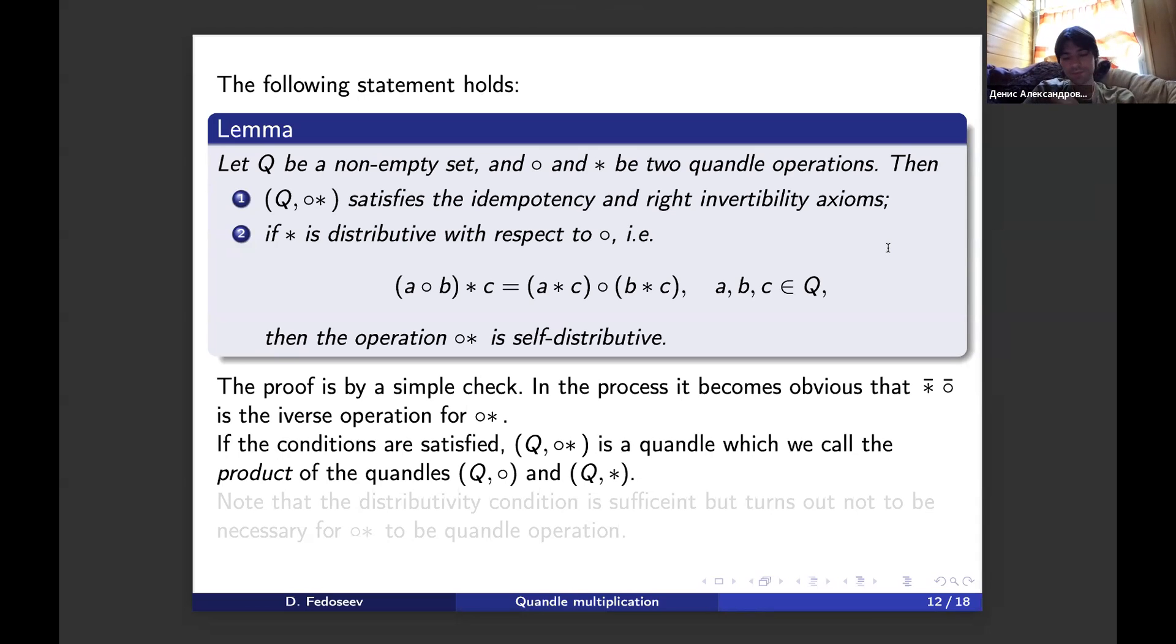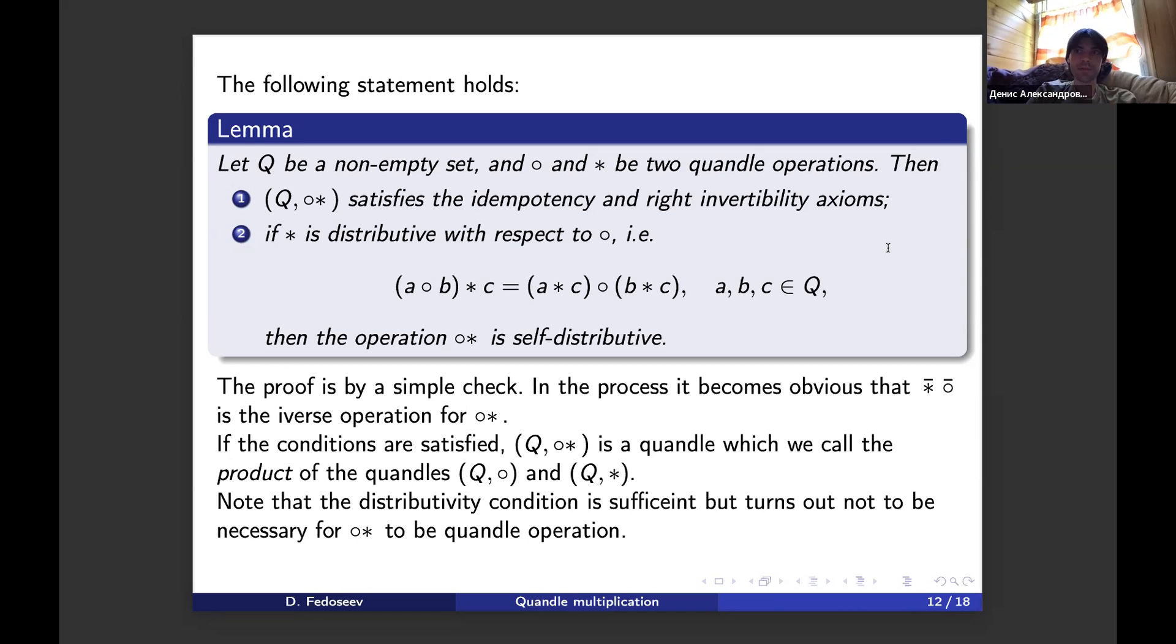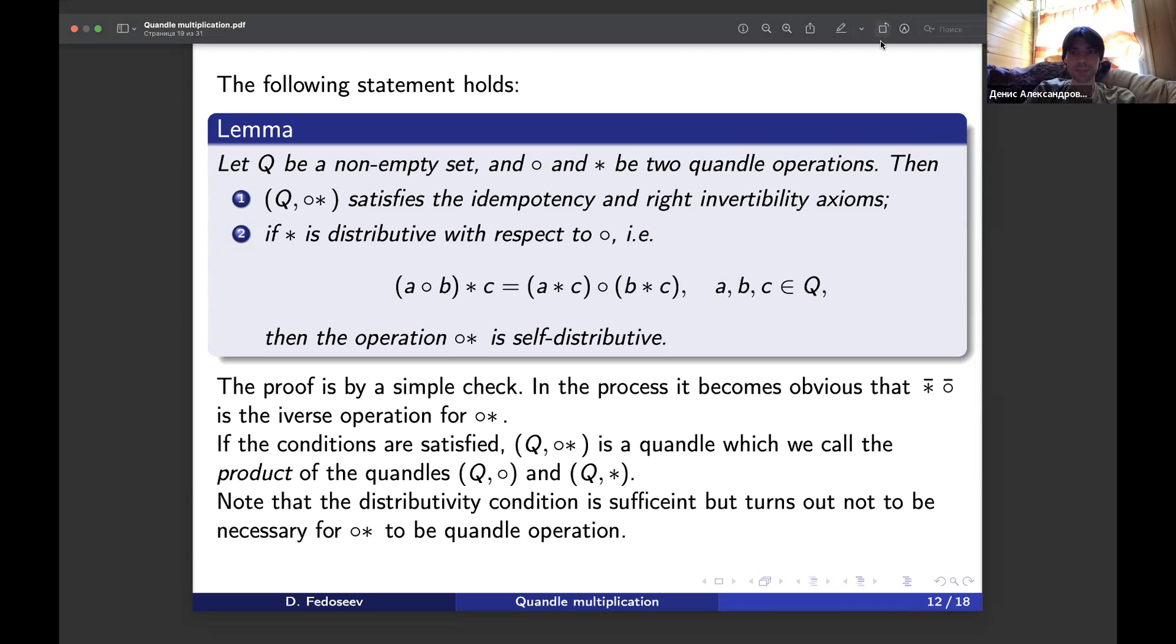This lemma is very simple, you just check everything by hand. In the process of checking, it becomes obvious that to get the inverse operation for circle star, we need to take the composition of star inverse and circle inverse in the reverse order. If those conditions are satisfied, we get a quandel which we call the product of the quandels we began with. We have a multiplication of quandels. Final remark: in this lemma we have a sufficient condition for the operation to be a quandel. But is it necessary? It turns out no. There are examples where circle star is a quandel operation but star is not distributive with respect to circle.